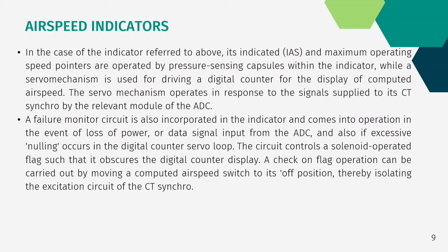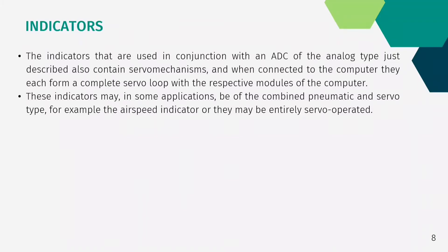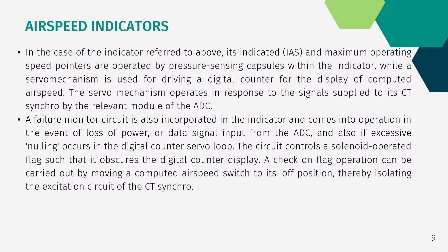In the case of the airspeed indicator, its indicated IAS and maximum operating speed pointers are operated by pressure sensing capsules within the indicator, while a servo mechanism is used for driving a digital counter for the display of computed airspeed. The servo mechanism operates in response to the signal supplied to its CT synchro by the relevant module of the ADC. A failure monitor circuit is also incorporated in the indicator and comes into operation in the event of loss of power or data signal input from the ADC, and also if excessive nulling occurs in the digital counter servo loop — the circuit controls a solenoid operated flag to obscure the digital counter display.